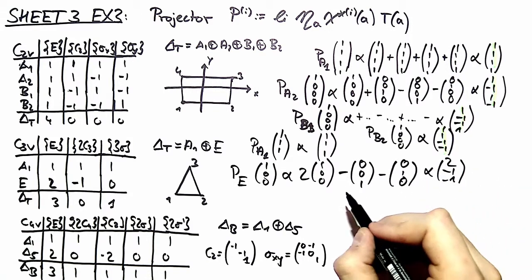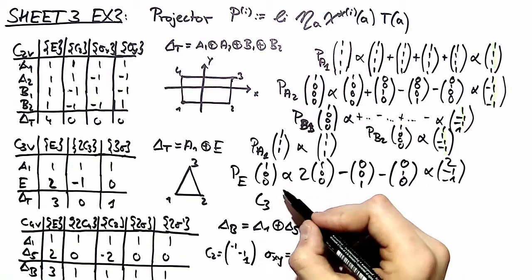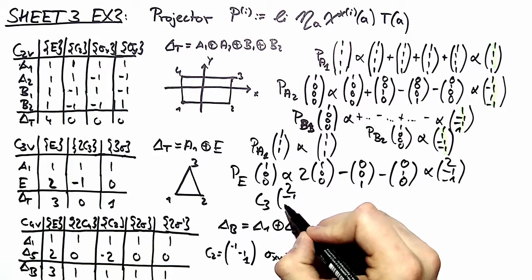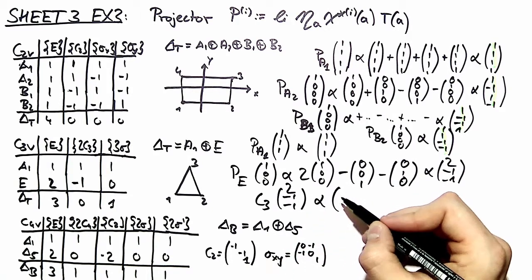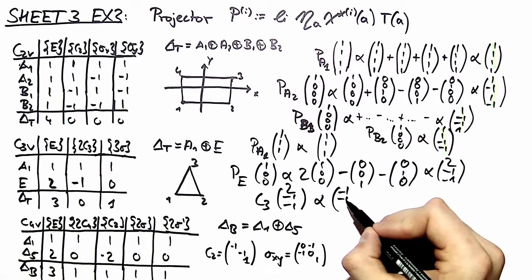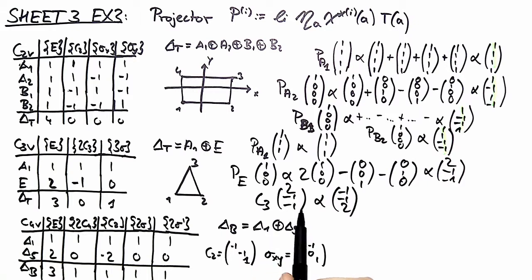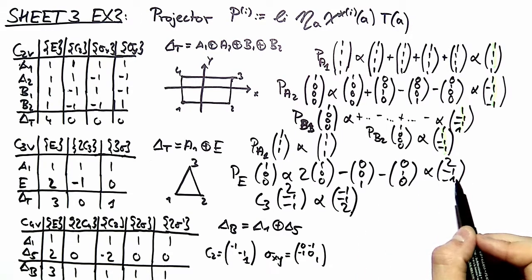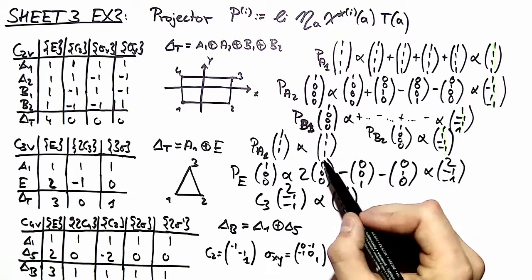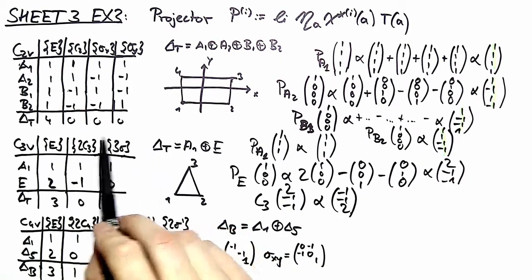Now we know from the lecture that if we act with a different symmetry operation — let's take C3 on that vector — we end up with a linearly independent vector, and this is the second basis vector. You can see that it is always rotated again by one third. So this and this are our basis vectors, together with the identity basis vector, for our tau representation of C3v.